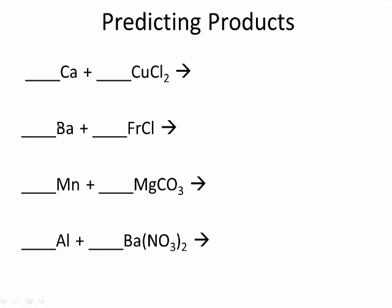We can see here that this metal is going to displace this other metal. The metal will always displace another metal, or the positive will always displace another positive. There's no real guesswork — the positive calcium can only bond with the negative chlorine. The positive calcium cannot bond with the positive copper.